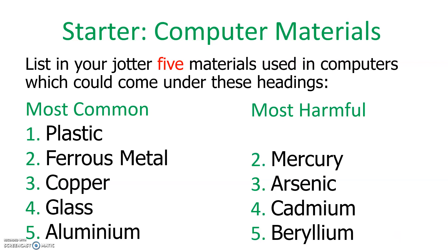Number two is mercury. If you've come across mercury before, it might have been in chemistry or in thermometers — mercury is that liquid metal. And then number one is lead, a more dense version of the lead inside your pencils but the same type of material. So those are your five most harmful materials used inside your computer, and we're going to talk more about them in today's lesson.